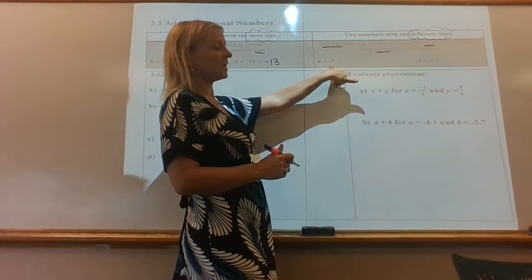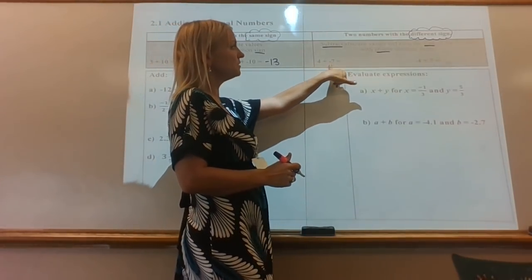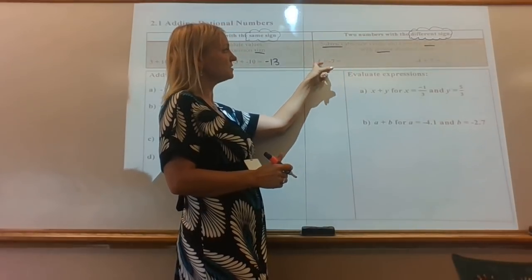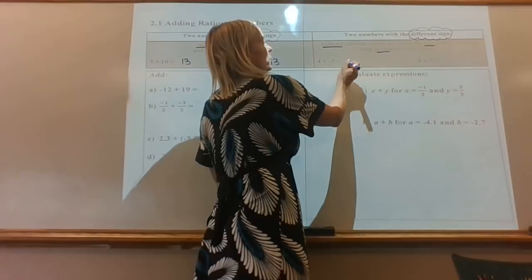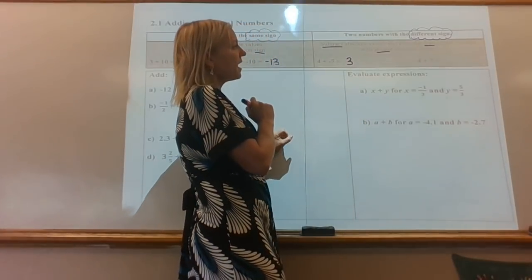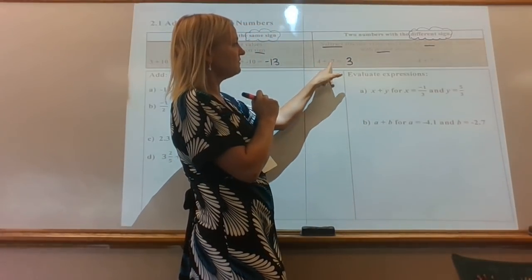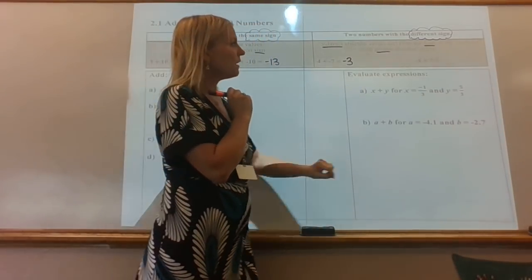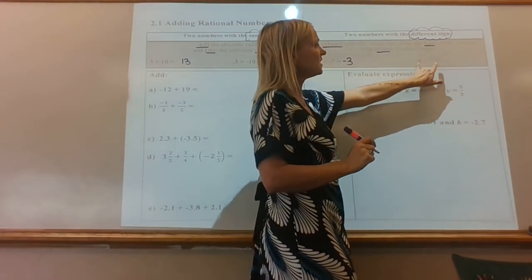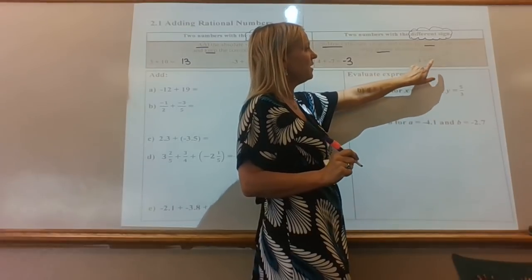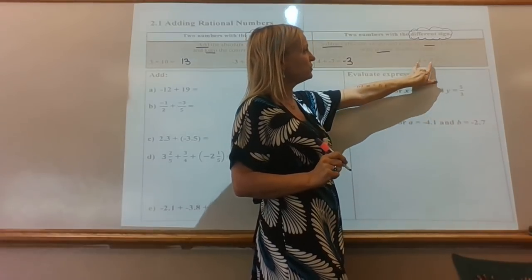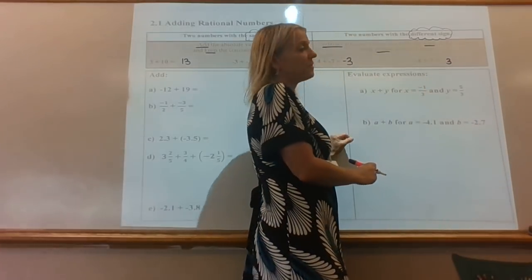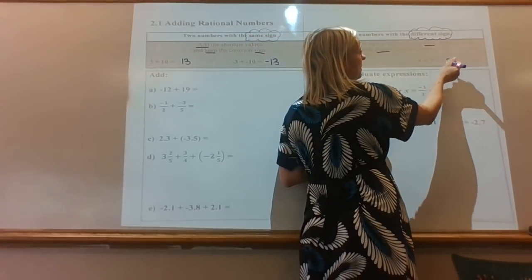So 4 plus negative 7 — they're different signs, so I'm going to subtract them. Seven is larger than four, so seven take away four is three. Which number is larger? Seven, and it's negative, so this answer is negative three. And then over here, same two numbers but this time the four is negative. So they're different signs — subtract them. Seven take away four is three. This time the positive is larger, so it's positive three.